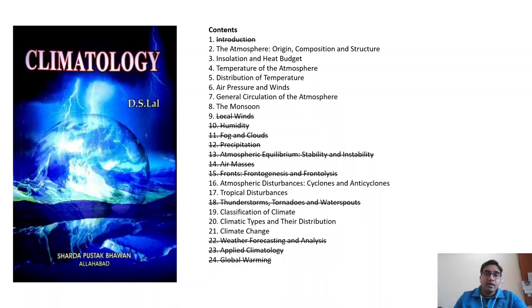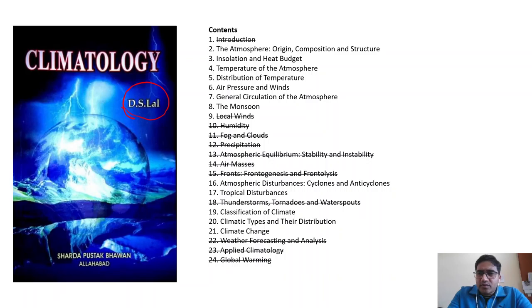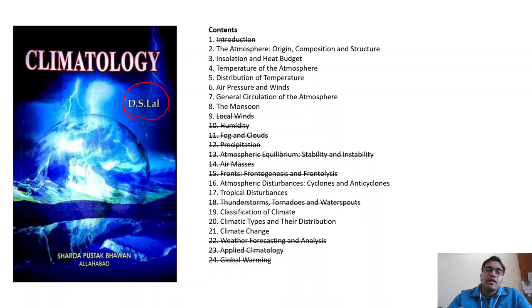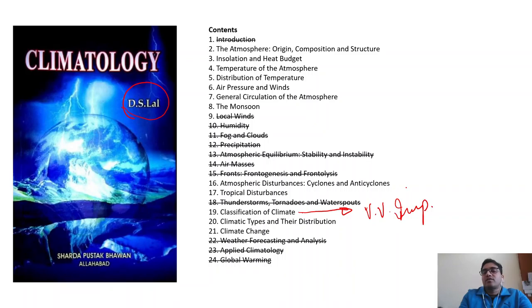Climatology is a very, very important portion. One book by D.S. Lal is more than enough. There are 24 chapters, and for geology background people, the most important ones are chapters 2, 3, 4, 5, 6, 7, 8, and then 16, 17, 19, 20, and 21. Chapter 19 is extremely important as several questions are now asked on climate classification. You have to read these chapters word by word if you wish to clear this examination.